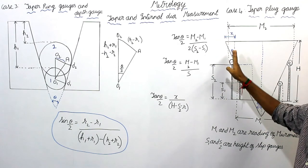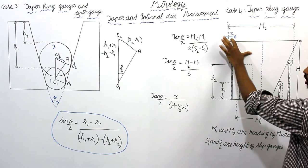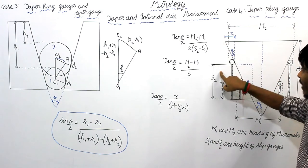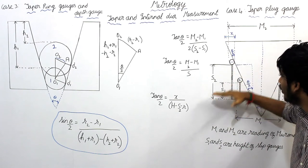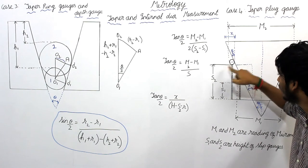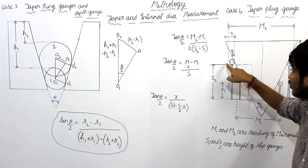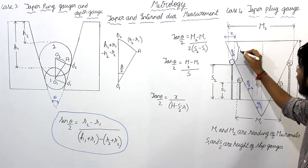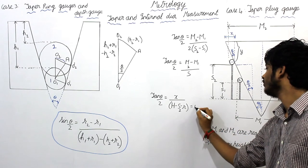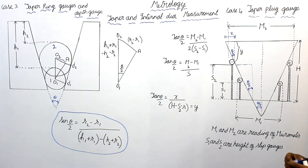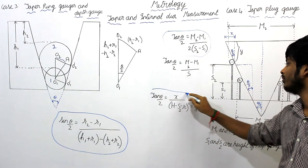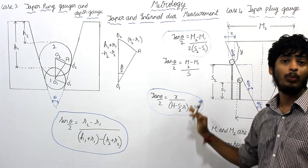For the final section of the taper plug gauge component: tan(theta/2) = X / Y, where X is the opposite distance and Y is the adjacent side. Y is calculated as H minus S2 minus R (the radius of the roller). Subtracting these gives the adjacent side. For the GATE exam, remember the formula: tan(theta/2) = (M2 − M1) / (2 × (S2 − S1)), and understand how it is derived.